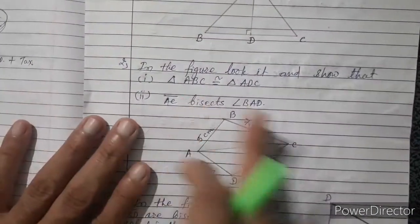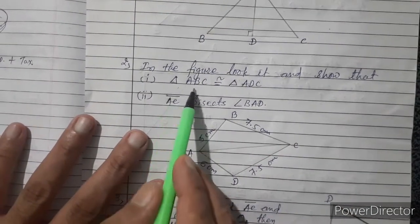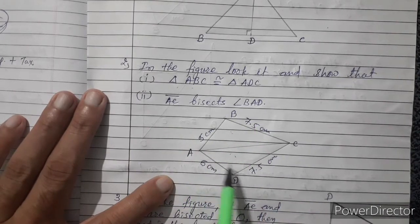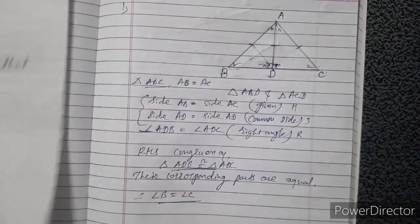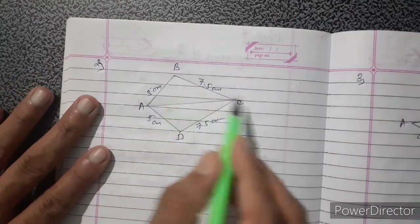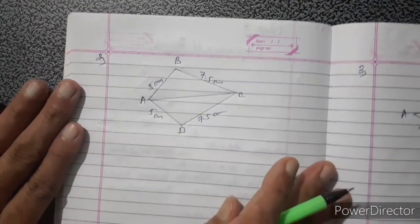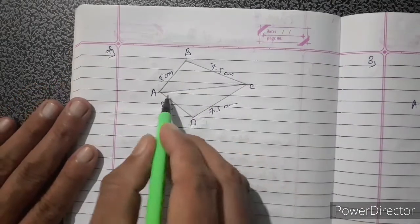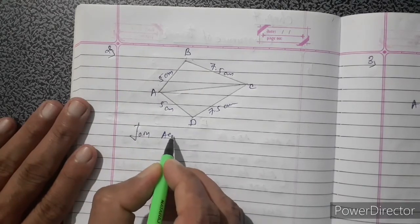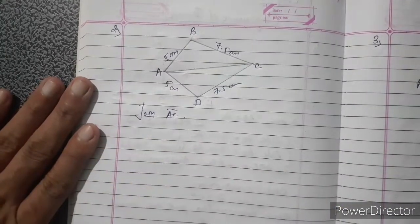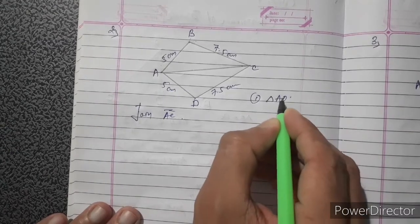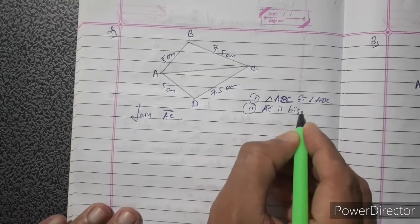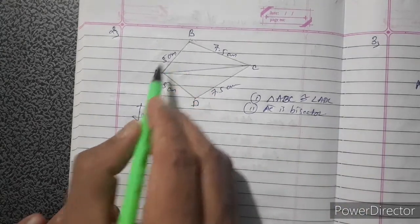Second question: in the figure, vertices A, B, C, D are given. We draw AC and the measurements of AB, AD, BC, and DC are given. AB equals AD equals 5 cm, and BC equals DC equals 7.5 cm. We need to prove: (1) triangle ABC is congruent to triangle ADC, and (2) AC is the bisector of angle BAD.